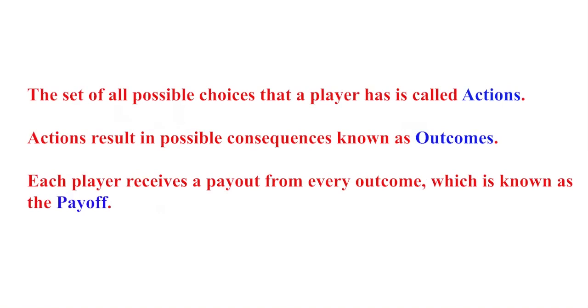The set of all possible choices that a player has is called actions. Actions result in possible consequences known as outcomes. Each player receives a payout from each outcome which is known as the payoff. A payoff function assigns quantifiable value to ordinal payoffs ranging from money to utility. A very interesting example in game theory is the game of matching pennies played between two players, player 1 and player 2.